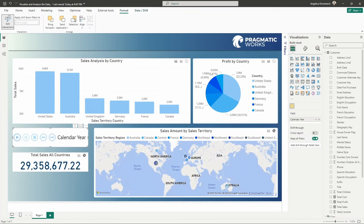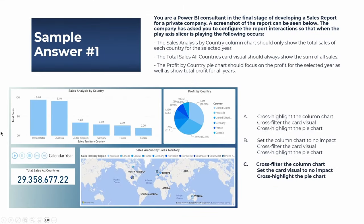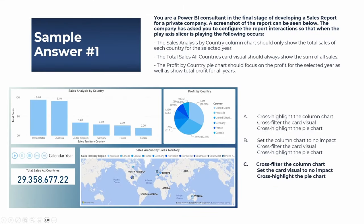So going back to our slides, the correct answer is: cross-filter on the column chart, set the pie chart to cross-highlight (we can leave that at the default setting), and for the card visual, we need to make sure we set that to no impact.